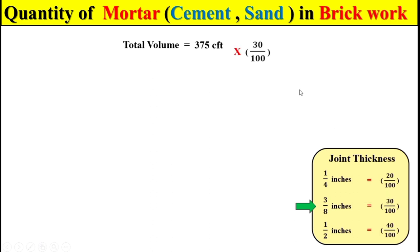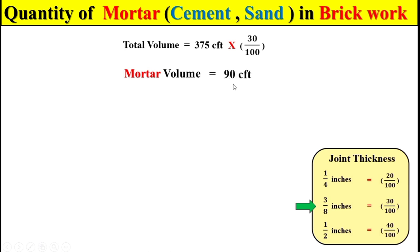Let's suppose our brickwork has a joint thickness of 3/8 inch, so we take the total quantity of mortar as 30% of the total brickwork volume. Multiplying these two terms, we get the total quantity of mortar, which is 90 cubic feet.